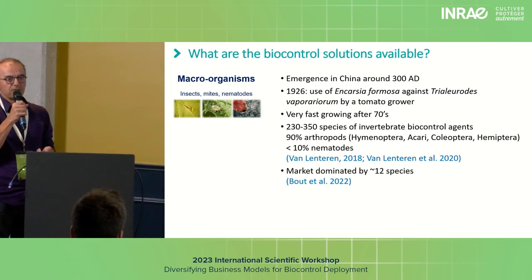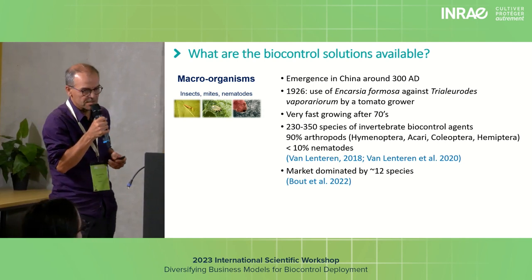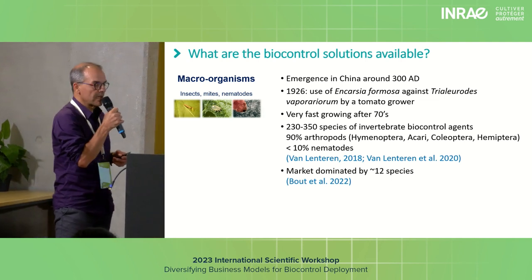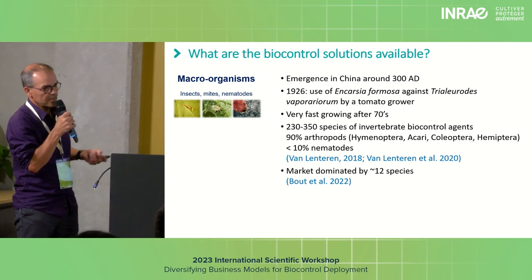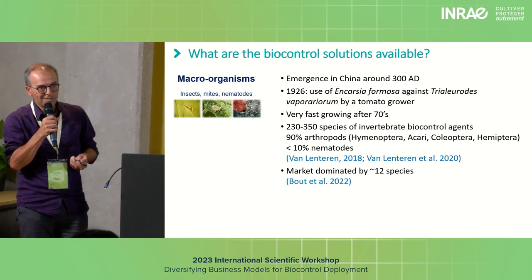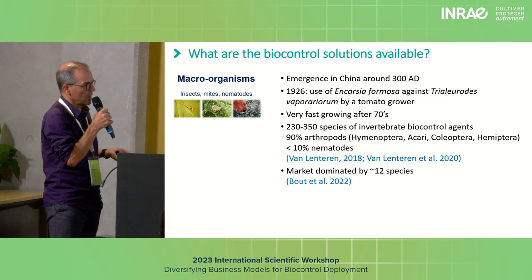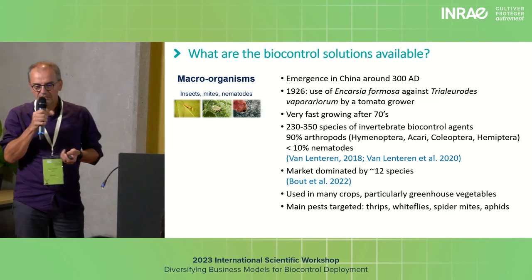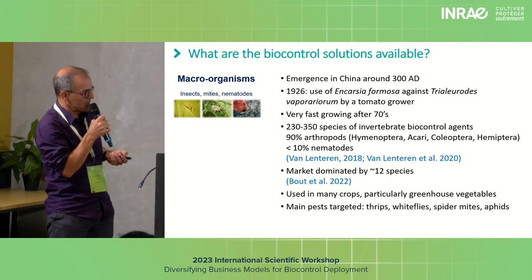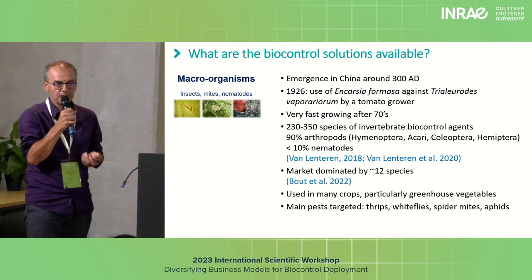At present, there are between 230 and 350 species of invertebrate biocontrol agents throughout the world, including 90% arthropods and less than 10% nematodes. The market is dominated by a low number of species — about 12. These macro-organisms are used in most crops, but particularly in greenhouse vegetables, and against pests like thrips, whiteflies, spider mites, or aphids.